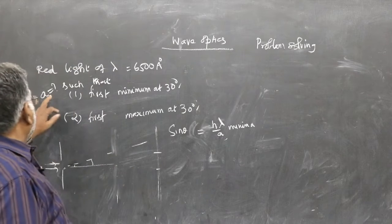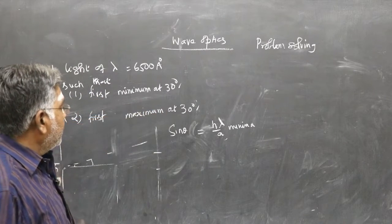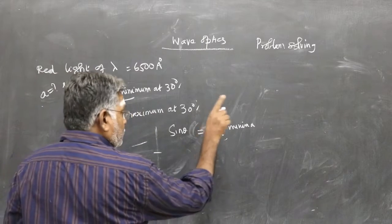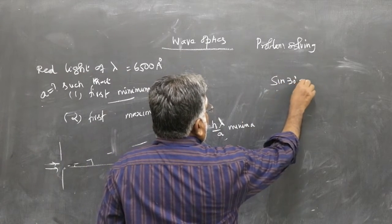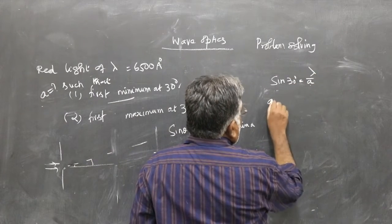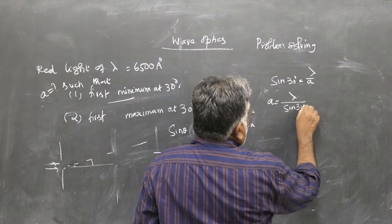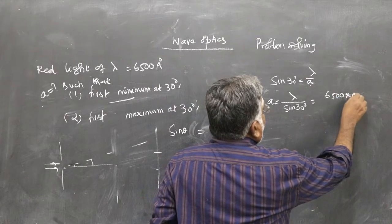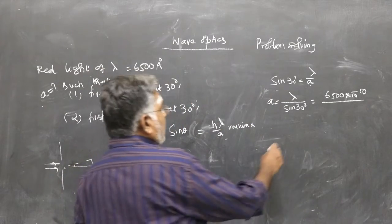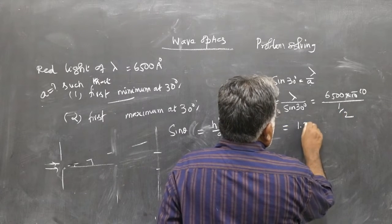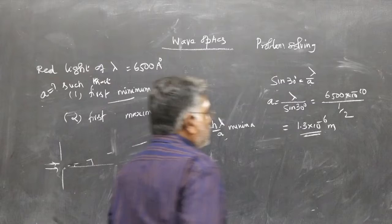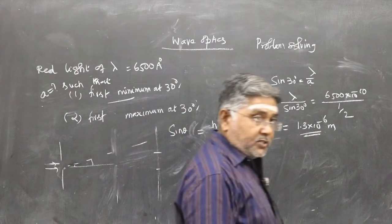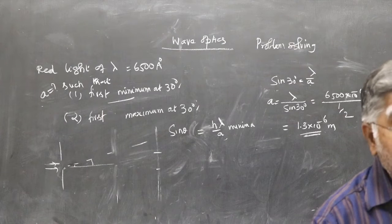The question is: what is the value of A such that the first minimum falls at 30 degrees? For minima, sin θ = nλ/A. First minimum means n = 1, so sin 30° = λ/A, giving A = λ/sin 30°. Lambda is 6500 × 10⁻¹⁰ meters and sin 30° = 1/2, so A = 1.3 × 10⁻⁶ meters. The slit width should be 1.3 × 10⁻⁶ m so that at 30 degrees you observe the first minimum.